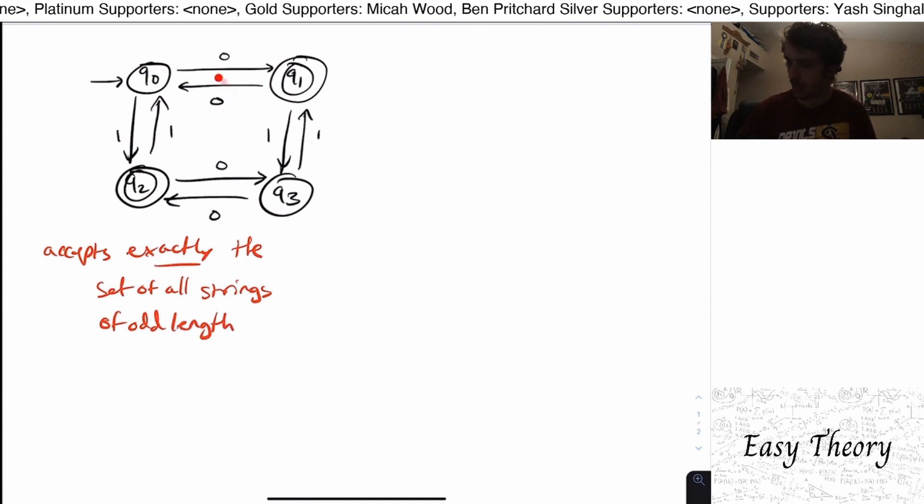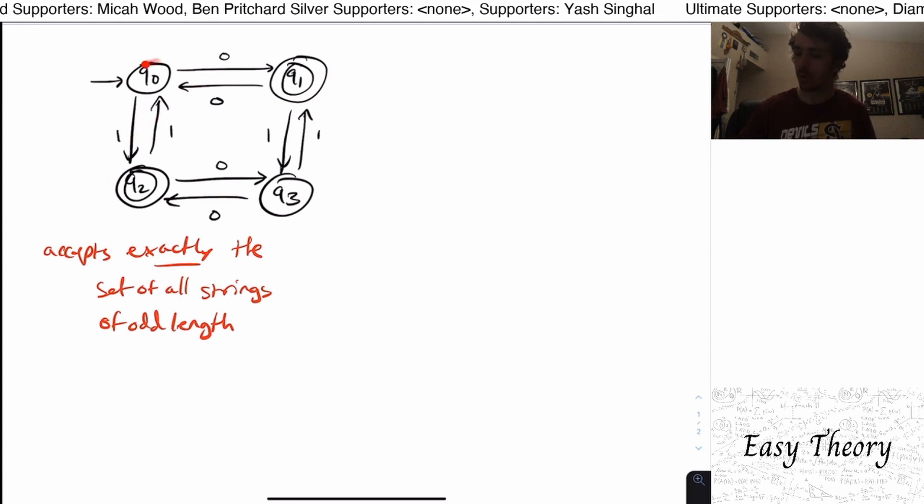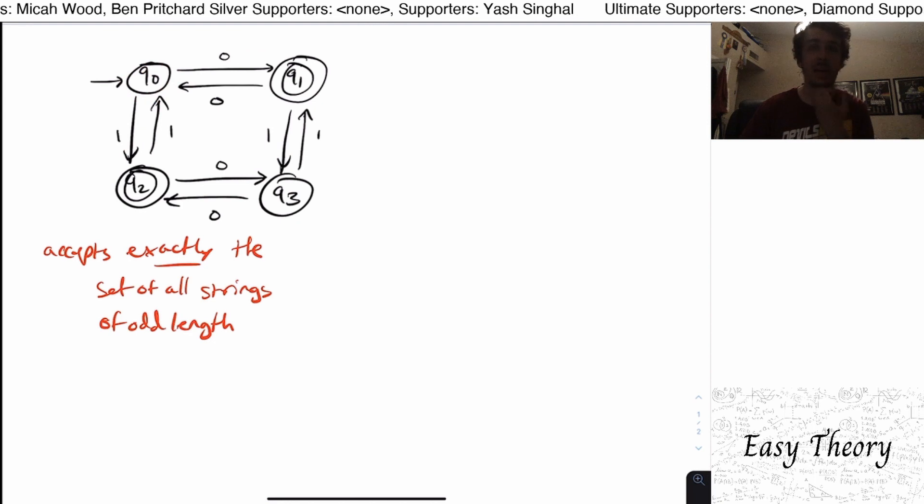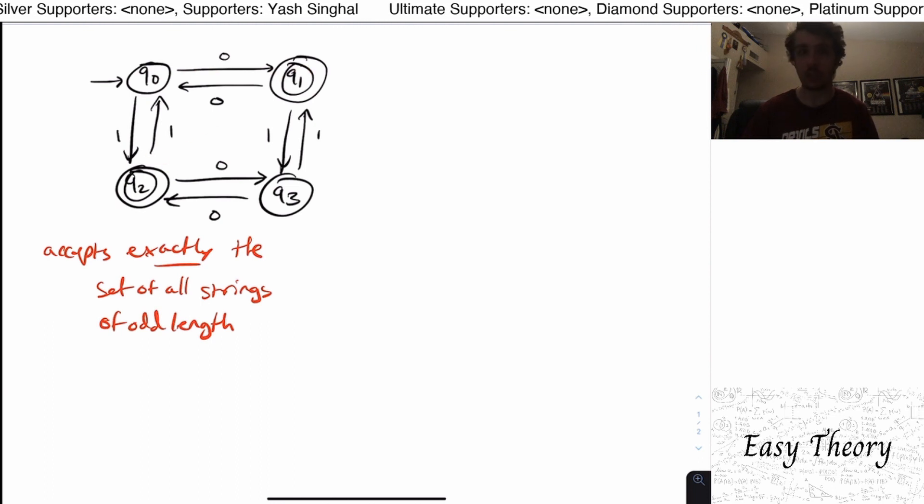Well, if you notice these two states, q0 and q3, let's call those the even states and the other two the odd states. Well, if we're in q0, right when we start up, we have seen zero characters. If we read a zero or a one, then we'll be either in q1 or in q2, which is a final state.